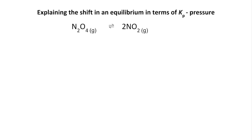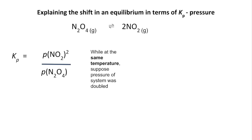So nearly finished. The last thing we're going to look at is the effect of pressure on an equilibrium position. So we're using an actual equilibrium now. So there's the Kp expression for that one. So let's suppose while at the same temperature, that's really important, that's why I've got it in bold. At the same temperature, suppose the pressure of the system was doubled.